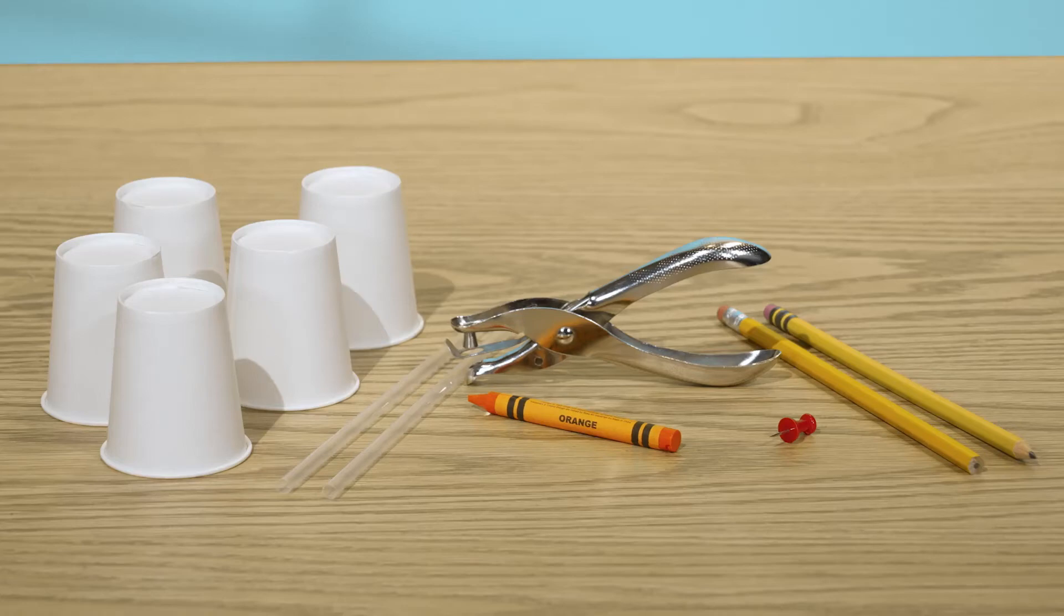To make your anemometer, you'll need five small paper cups, two straws, a hole punch, a crayon in your favorite color, a pencil with a good eraser, as well as a separate sharpened pencil, and a pushpin.